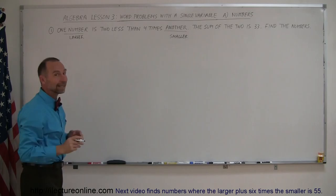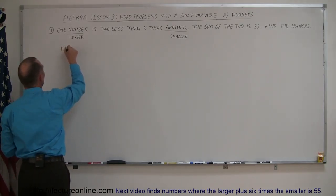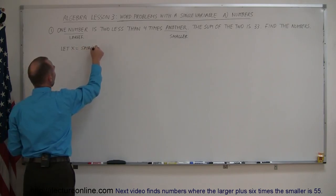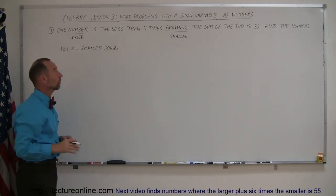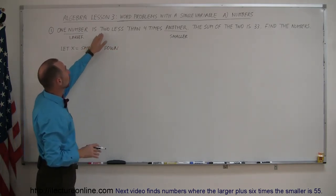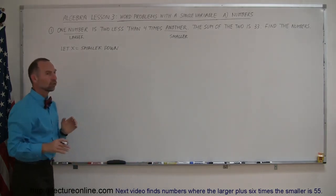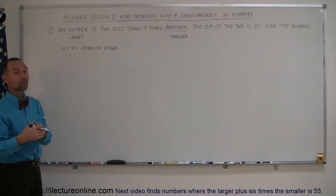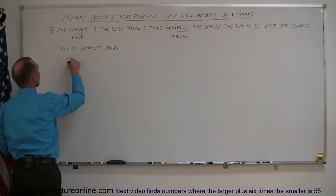And typically, you're going to let x equal the smaller number, and it's always a good idea to write that down. So how would we express the larger number? The larger number is going to be two less than four times the smaller number. But if the smaller number is x, then four times the smaller number is 4x, and then two less than that, we subtract two from 4x. So we could say then that 4x minus two is equal to the larger number.